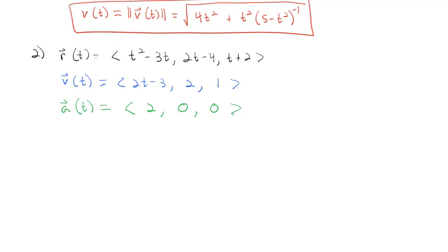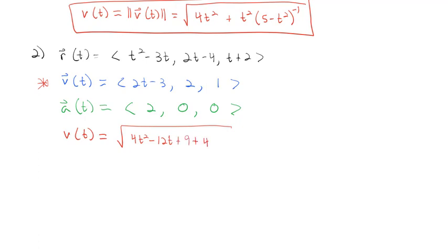So the particle is only accelerating in the x direction — toward the i vector. In the other directions, the acceleration is zero; the velocity is constant at 2 and 1 respectively. For speed v(t), we take the magnitude of the velocity vector: √((2t−3)² + 2² + 1²) = √(4t² − 12t + 9 + 4 + 1) = √(4t² − 12t + 14). That is our speed.